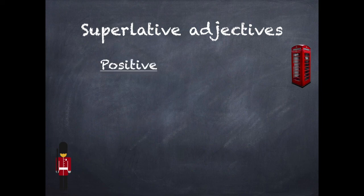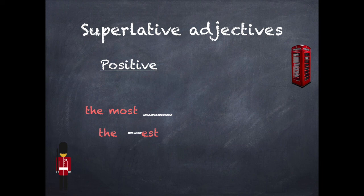We have positive and negative forms. In the positive form, with long adjectives we will use 'the most' — for example, 'the most comfortable'. Or if it's a short adjective, we will use -EST at the end of the adjective, like 'the laziest'. In the negative form we will always use 'the least' — for example, 'the least hard-working person'.